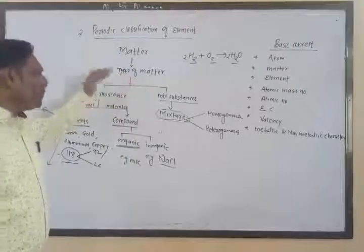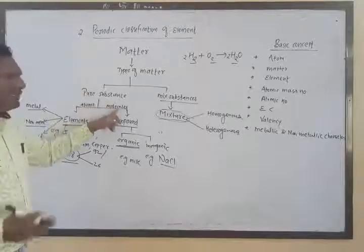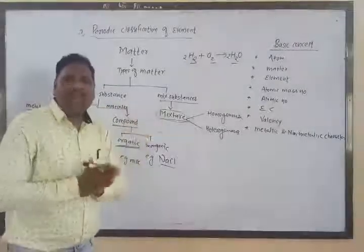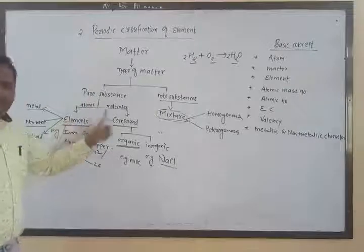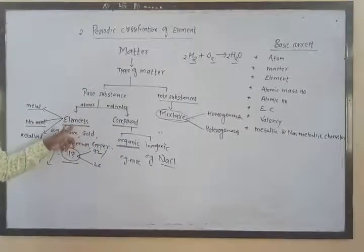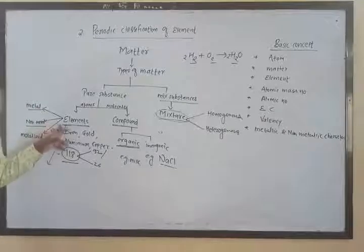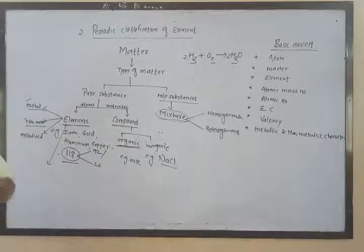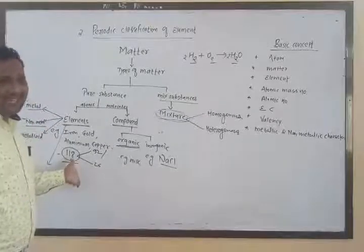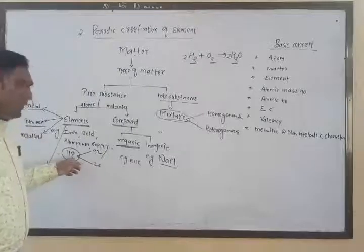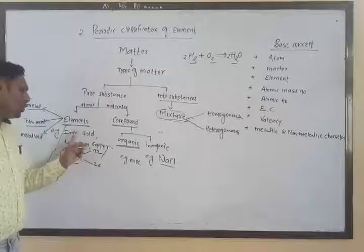To summarize: matter is made up of atoms. Pure substance is made up of similar kinds of atoms or molecules; mixed substance is made up of different substances. Pure substance is classified into elements and compounds. The pure substance made up of similar kinds of atoms is called an element. The first traditional classification of elements was given by Lavoisier in the form of metals and non-metals; later metalloids were included. Till date, 118 elements exist. Examples of elements: iron, gold, silver, aluminum, copper, etc.